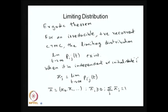Now I am moving into the limiting distribution. The way we discussed the limiting distribution for the DTMC, the same concept can be used for the CTMC also. The change is that instead of the one-step transition probability matrix, here we have to use the infinitesimal generator matrix in a different way.